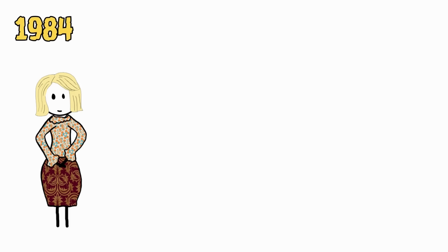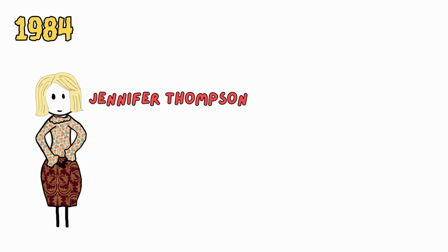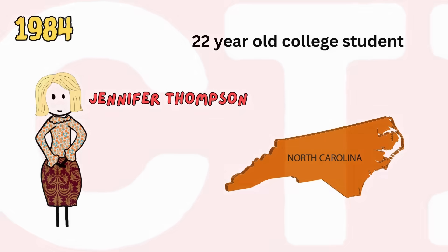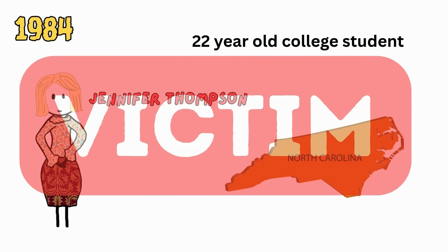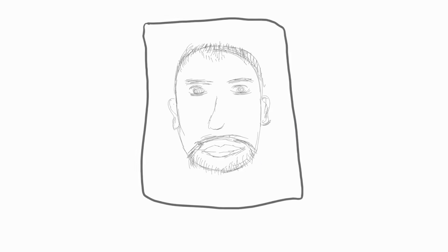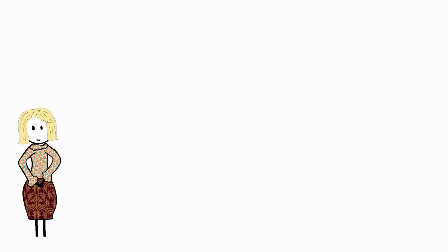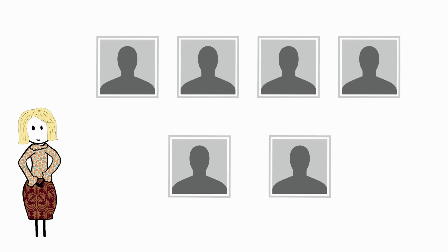Misattribution. In 1984, Jennifer Thompson, then a 22-year-old college student in North Carolina, was the victim of a violent attack at knife point. After reporting the incident to the police, a sketch of the assailant was made.